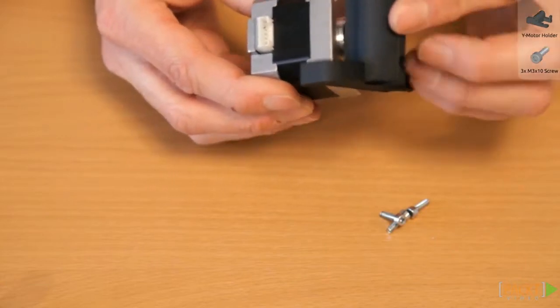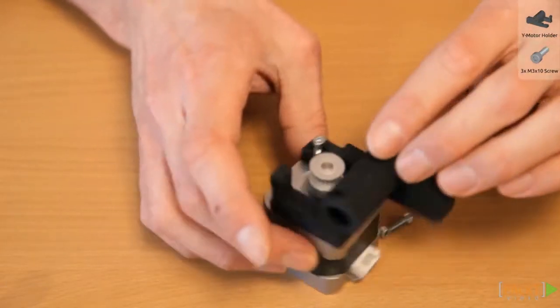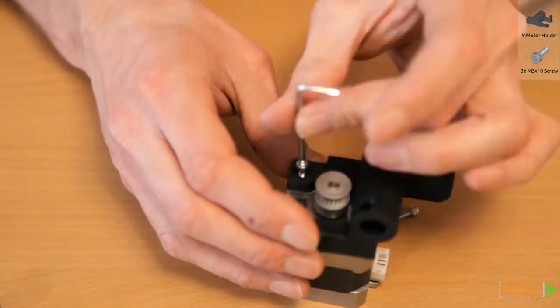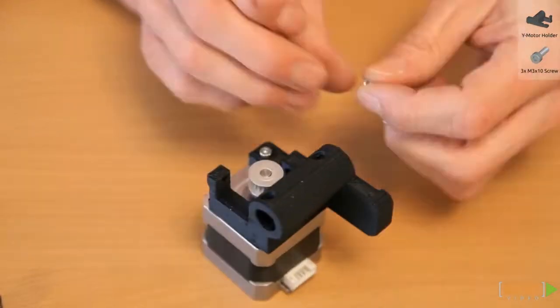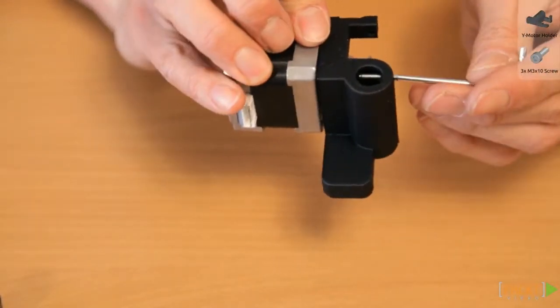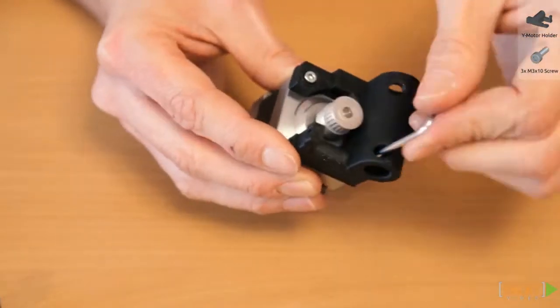Make sure the motor connector points downwards. Mount the motor with the three M3x10 screws to the motor holder. Tighten them well but don't overdo it.